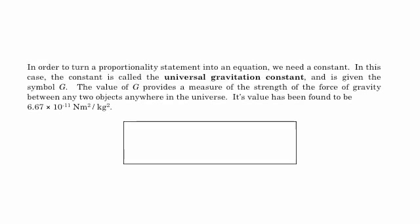We give it the symbol big G. And it has a value of 6.67 times 10 to the negative 11 Newton meters squared per kilogram squared. And so we arrive at Newton's law of gravity, which is that the force of gravity is equal to G times M1 times M2, all divided by R squared.